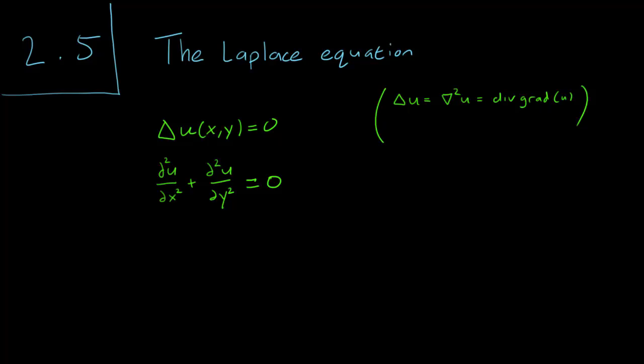So if you may remember, the Laplacian is the divergence of the gradient. It can also be written as, in the 2D case, the second derivative with respect to x plus the second derivative with respect to y.